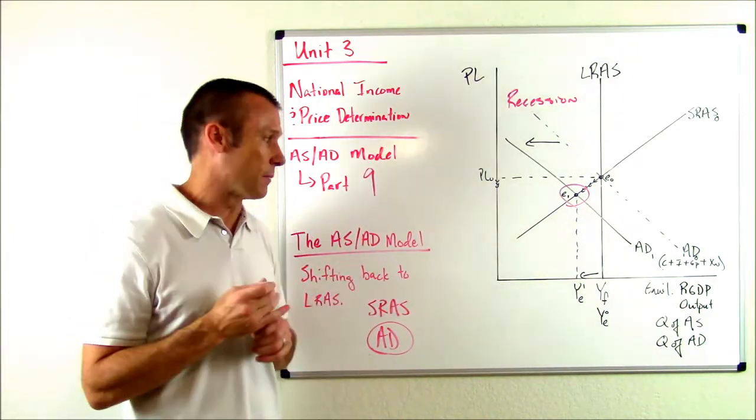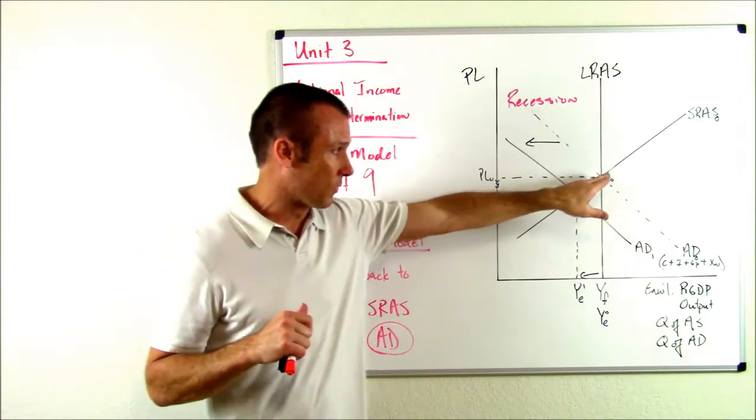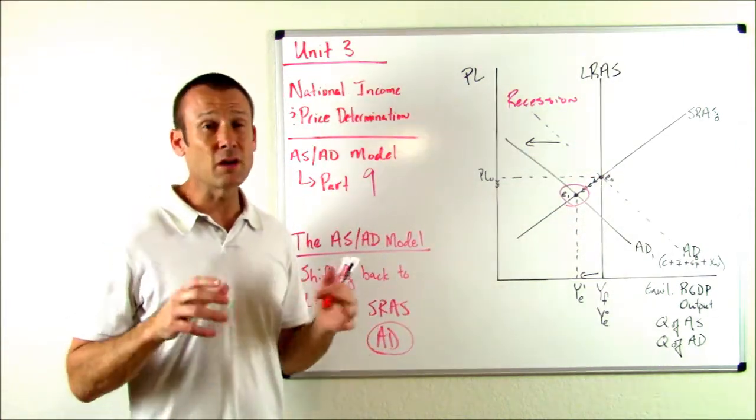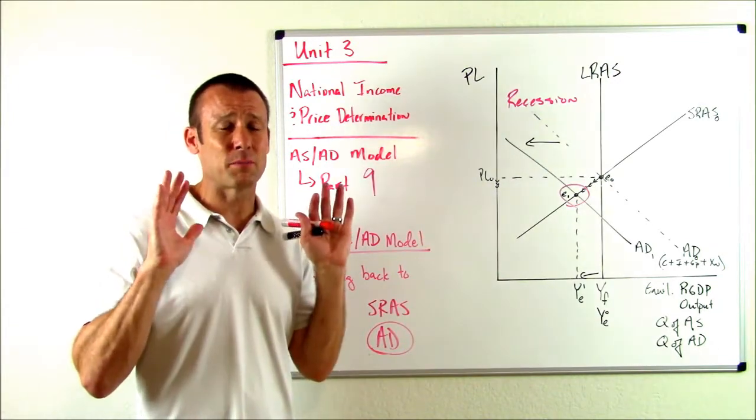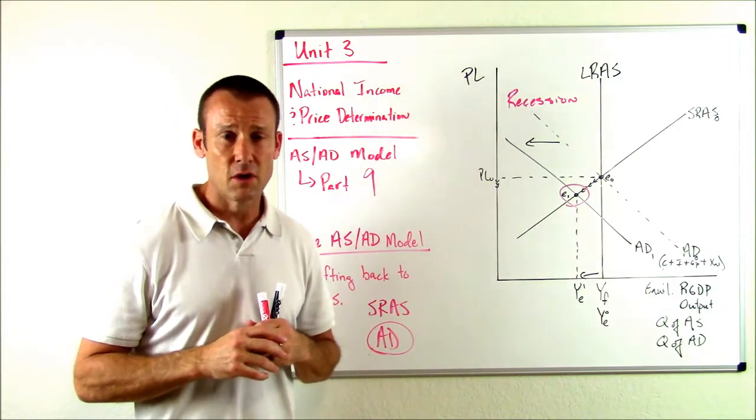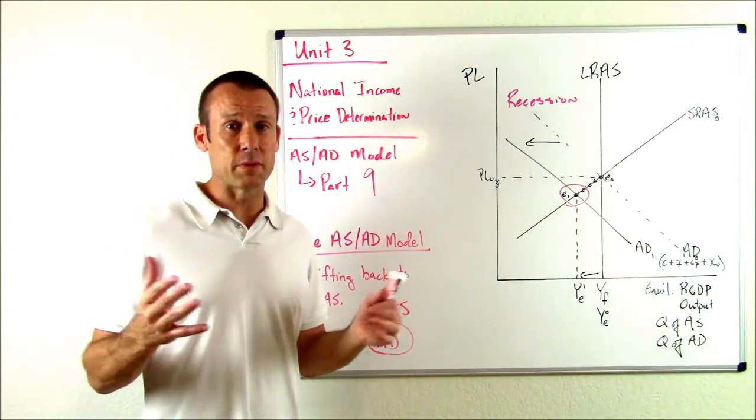And we would end up right back at that original equilibrium point, for all intents and purposes. Ceteris paribus, keeping everything else held equal, we'd end up right back at E sub zero. But what else could happen? The other thing that could happen is our policy makers do nothing. That's right. We just say, okay, we're just going to wait for the long run to take place. Well, what does that mean?